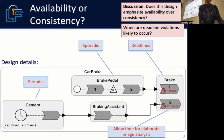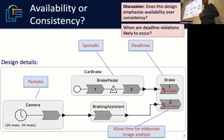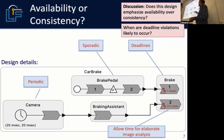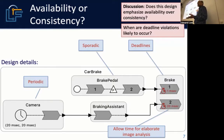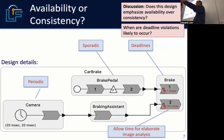Consider this deadline violation scenario: the brake pedal produces an event with a timestamp one nanosecond later than a camera frame. The braking assistant takes 15 milliseconds to execute — enough to meet its deadline. But because of the consistency requirement, you can't process the brake pedal event until the braking assistant event is processed. So you wait the full 15 milliseconds, get the braking assistant result, process it, then try to process the brake pedal and violate the one-millisecond deadline.